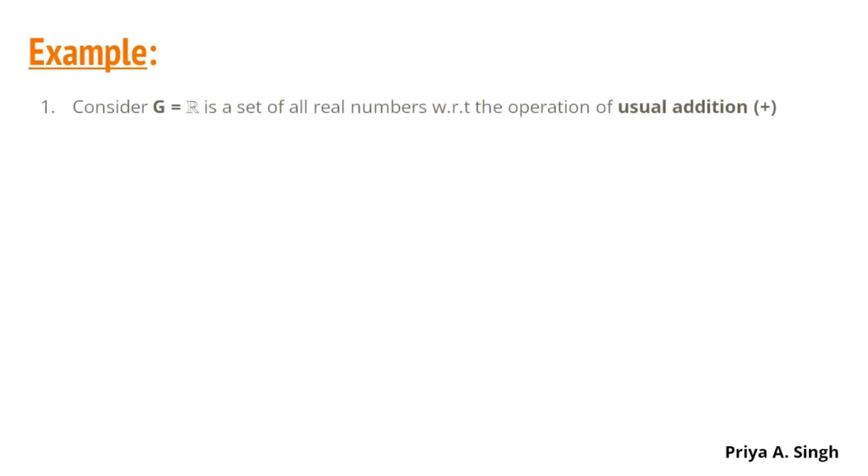Let us consider G to be the set of all real numbers which is denoted by R under the operation of usual addition. So, for any two real numbers, A plus B is also a real number. That is, we can say that the set of real numbers is closed with respect to addition.